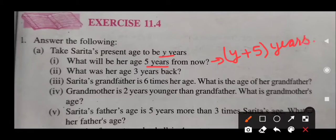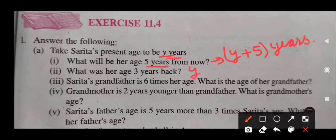Now what was her age 3 years back? Back means we have to subtract the age, because I was younger. In my previous years I was younger than today. So 3 years back means how much we have to subtract? We have to subtract 3 from the present age. Present age is Y, so 3 years back means Y minus 3 years.